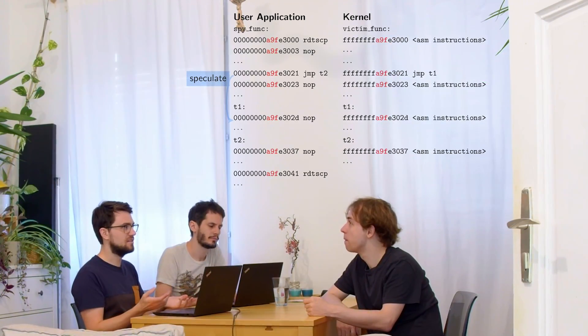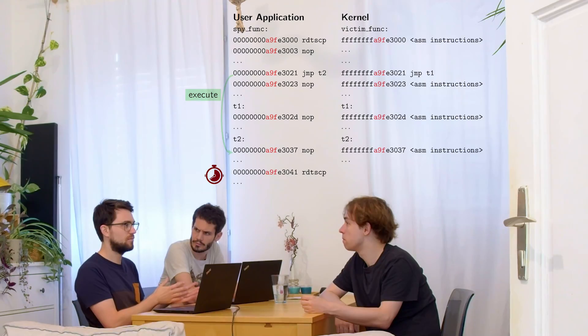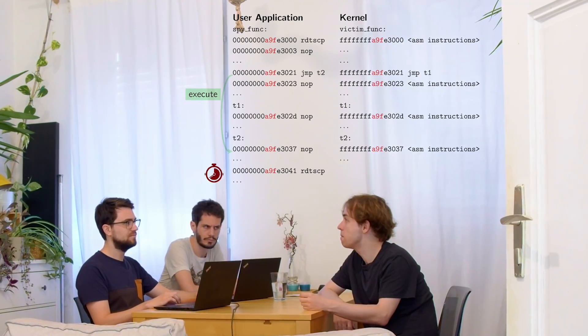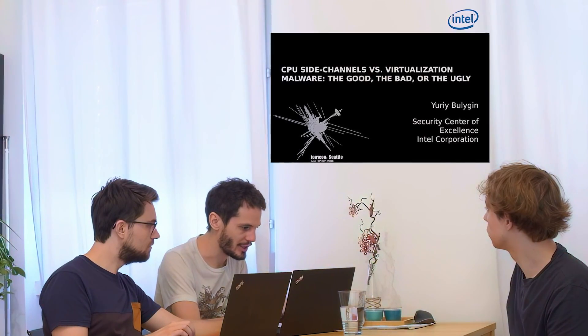Or the other way around. So I can see where this randomized branch lies. Maybe we can do something more powerful with that, some more powerful attacks. Oh, attacks on crypto. I just found something here: Predicting Secret Keys via Branch Prediction by Acıiçmez and colleagues, or CPU side channels versus virtualization malware.